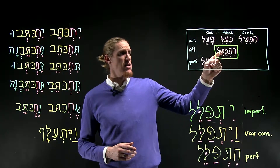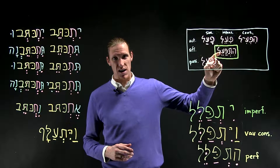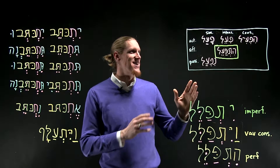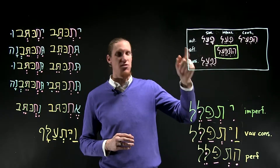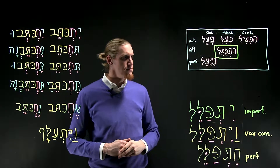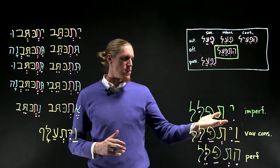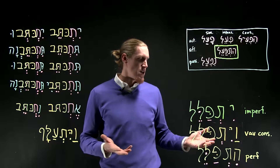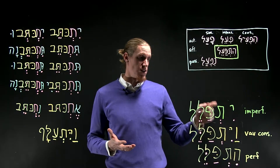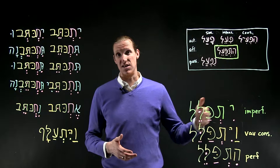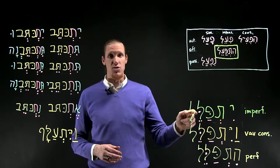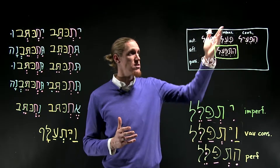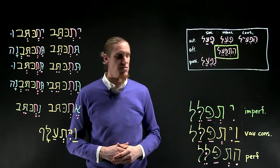The hitpa'el is in the central position on our chart, not for any pride of place, just by accident. It's the intensive reflexive stem. Here you see the basic vocal pattern and the visual signs. The visual signs would be a tav in between the prefix and the first root letter, and a dagesh forte in the middle root letter — the dimmeral — same as the piel, which is the case for all the verbs that appear in the intensive column.